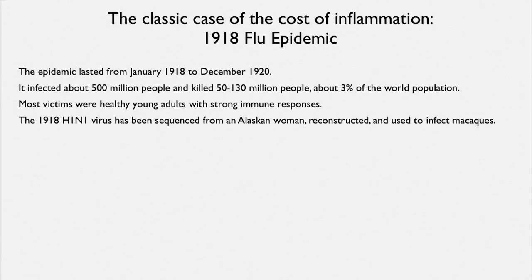Most of the victims—this is interesting—most of the victims were healthy young adults who had strong immune responses. The 1918 virus has been sequenced from an Alaskan woman, reconstructed, and used to infect macaques.